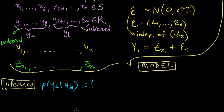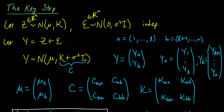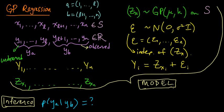This is where the key step from our calculation in the previous video comes into play. In the previous video, we had a Gaussian vector z and Gaussian epsilon, added them together to get y, and figured out the conditional distribution of y_a given y_b. The corresponding thing here is that y_i = z(x_i) + epsilon, which looks very similar.